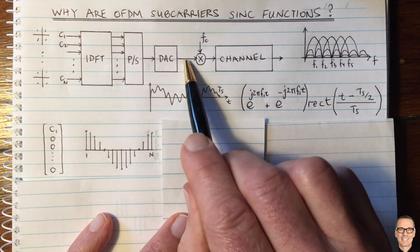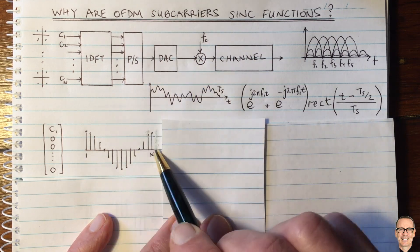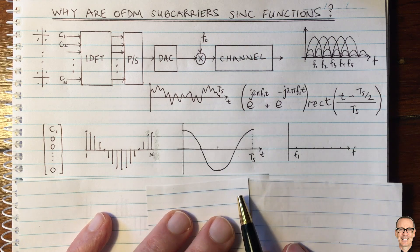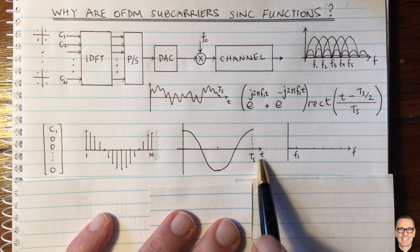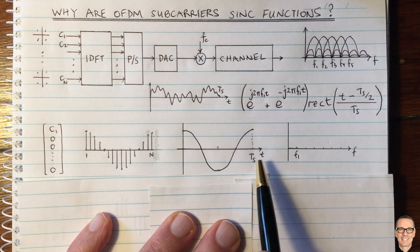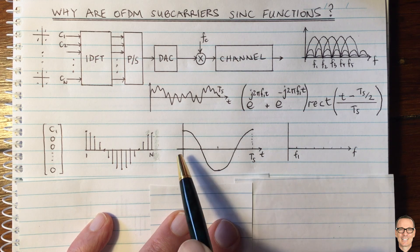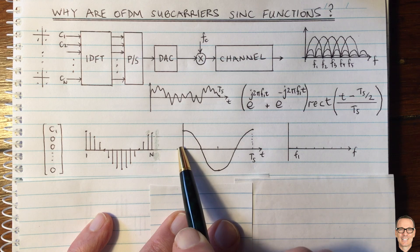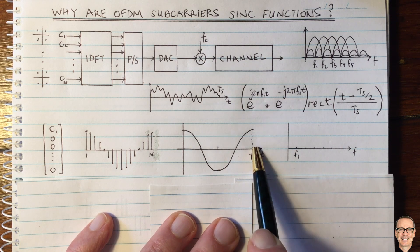So now let's think about the output of the DAC from this signal here. Of course, it is a continuous time waveform, which exists only between zero time and the symbol time. It is zero for previous time and zero for future time.